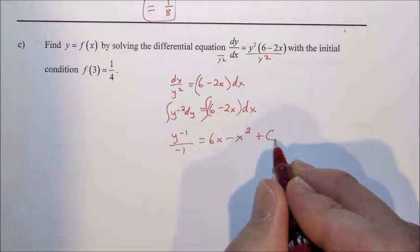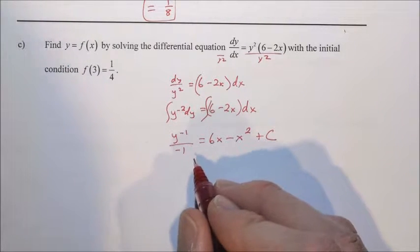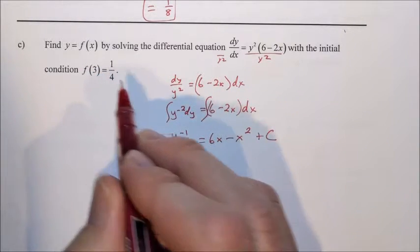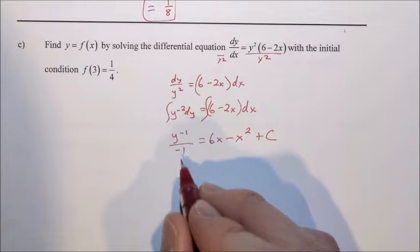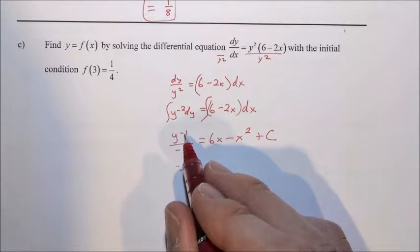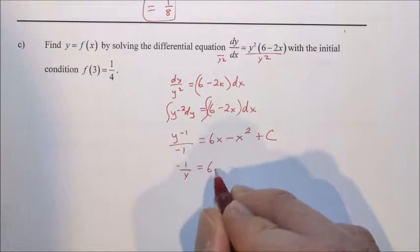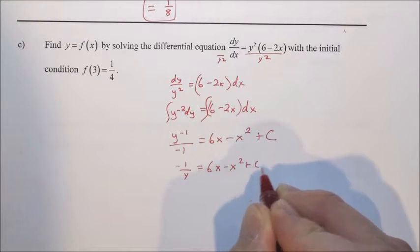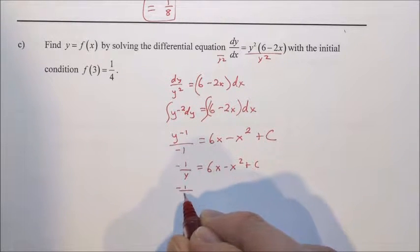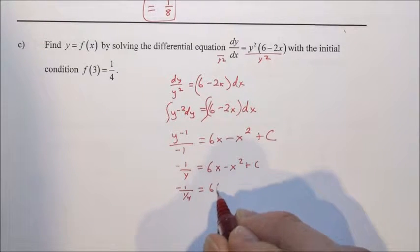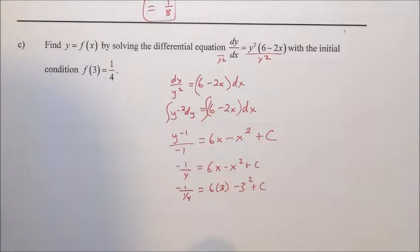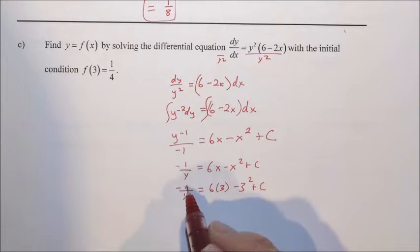Step 3, don't forget, plus c. Now we have to do step 4, which is to use the initial condition to find c. I'm going to rewrite this. This is going to become negative 1 over y is equal to 6x minus x squared plus c. And we're going to replace y with 1/4. So we have negative 1 over 1/4. And that's equal to 6 times 3 minus 3 squared plus c.